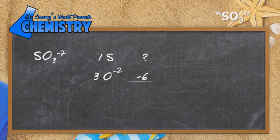We know the whole charge of the polyatomic ion is negative two. So we can write that the charge of the sulfur plus the charge of the oxygen has to equal negative two.